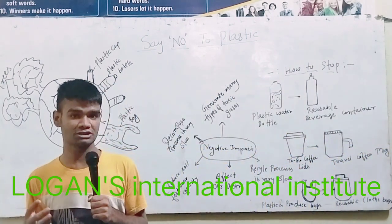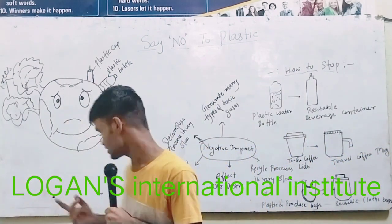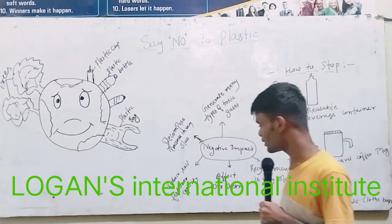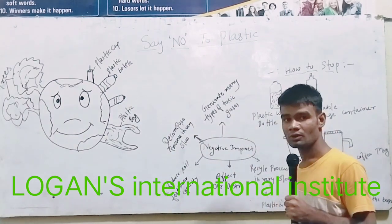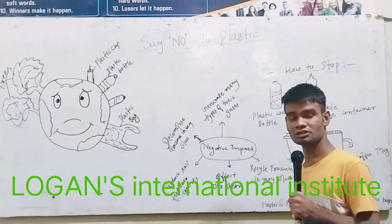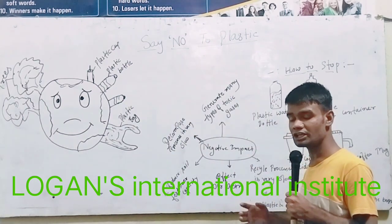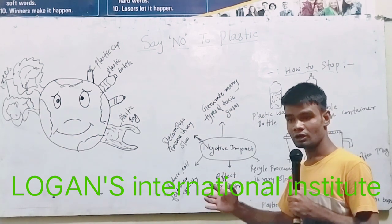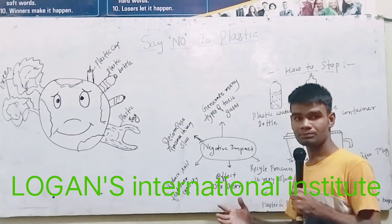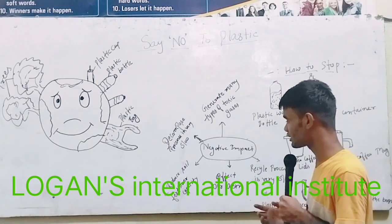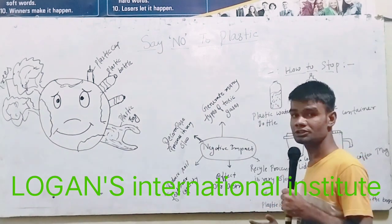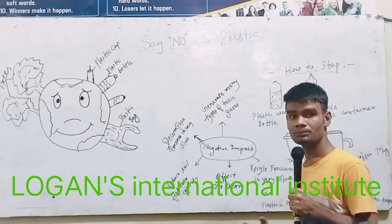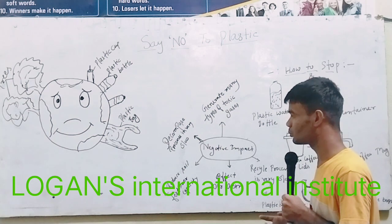The fourth impact is that plastic reduces soil fertility. When any person uses plastic and throws it on the land, our soil's fertility capacity decreases greatly because of plastic.